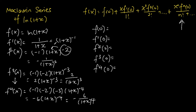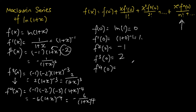Now we find each derivative evaluated at x equals 0. f(0) equals ln(1+0) equals ln(1) equals 0. f'(0) equals (1+0) to the negative 1, which equals 1. f''(0) equals negative 1 over 1 squared, which equals negative 1. f'''(0) equals 2 over (1+0) cubed, which equals 2. f''''(0) equals negative 6.